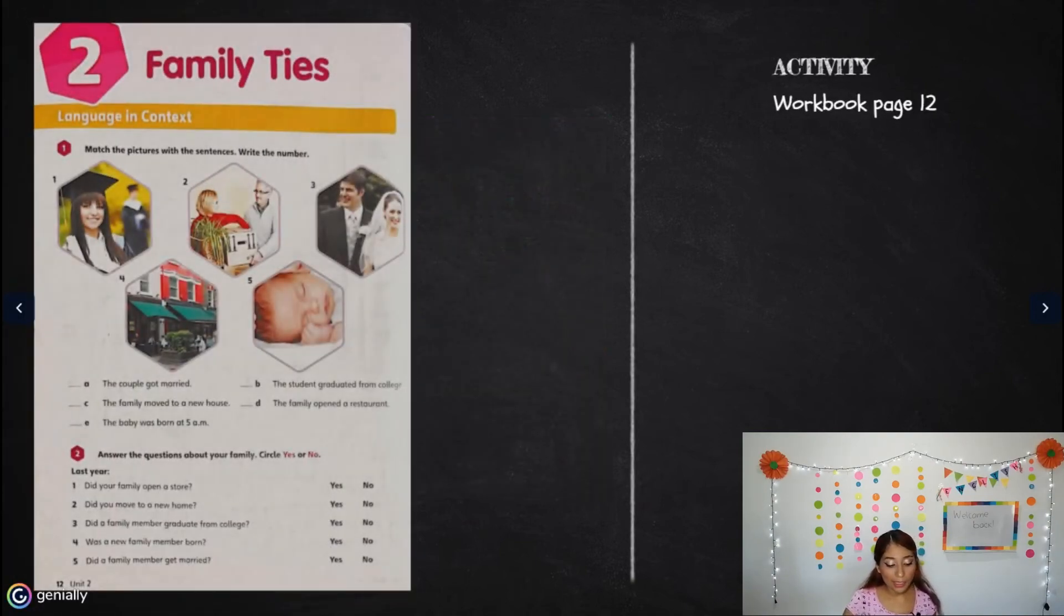We have another activity and it's on page 12 for the workbook, and it's super easy because most of page 26 of the book was only pronunciation and it's super simple. Page 12 of the workbook says number one, activity number one: match the pictures with the sentences, write the number. You're going to have A, B, C, D and also match it with the pictures one, two, three, four, five. Easy.